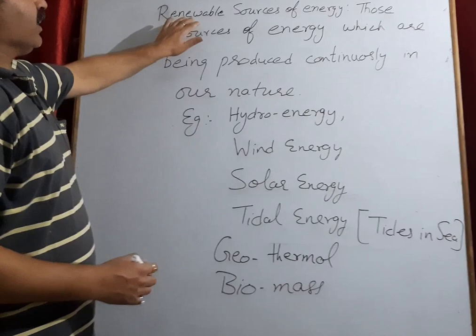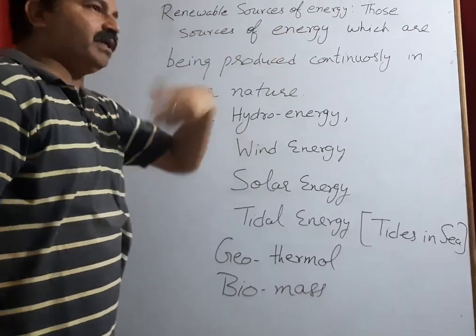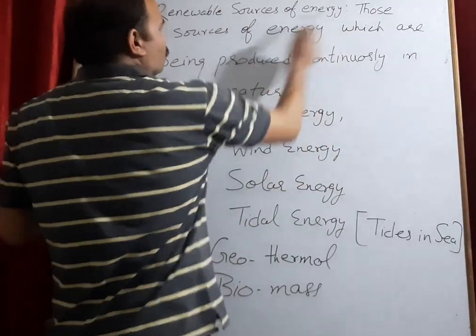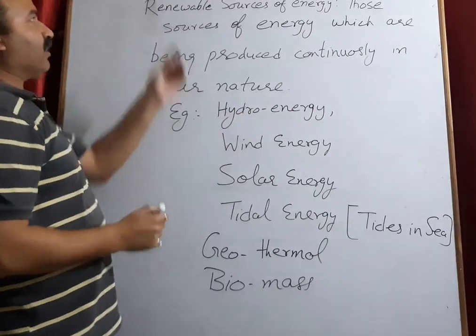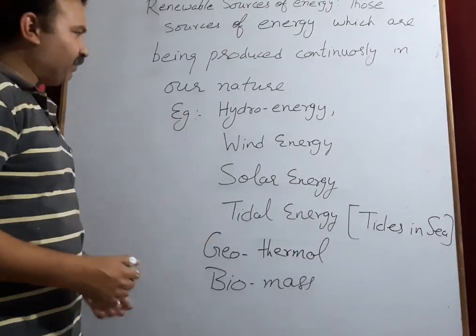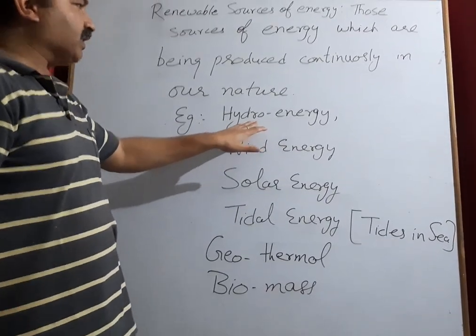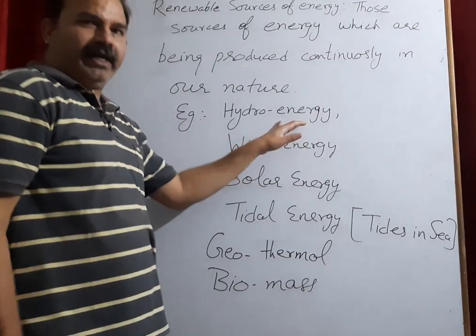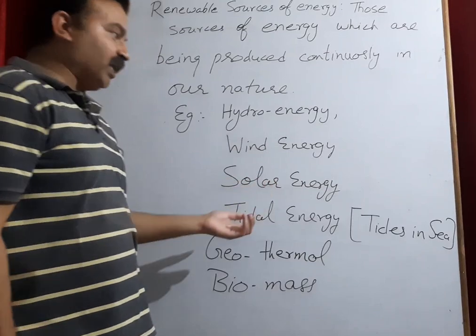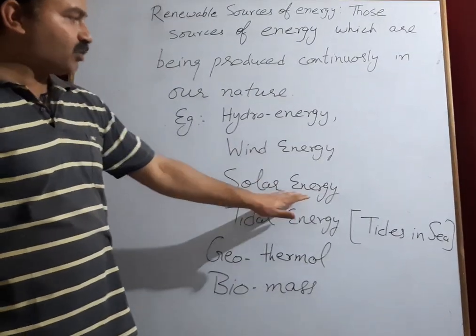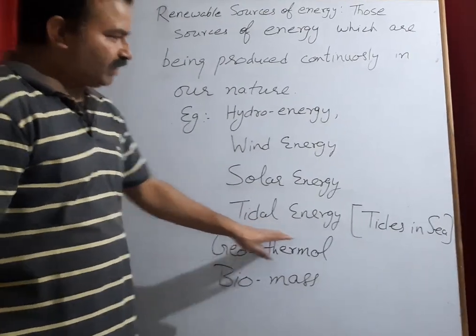The second type is renewable source of energy — those sources which are being produced continuously in nature. Few examples: first is hydro energy — hydro means water, we get energy from water, for example in water dams. Next is wind energy — the energy we get from fast-moving wind. Third is solar energy — solar means energy from the sun. Fourth is tidal energy — the energy from ocean tides.